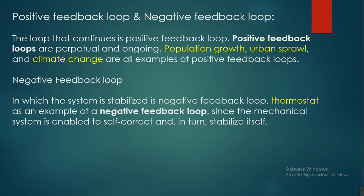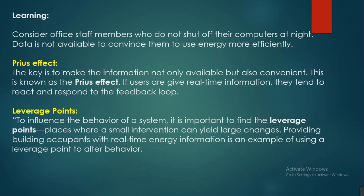Negative feedback loops stabilize a system. A thermostat is an example of a negative feedback loop, since the mechanical system is able to self-correct and stabilize itself. From these loops, consider office behavior: office staff members often forget to shut off their computers at night because they have no data available to convince them to use energy more efficiently. The key is to make information not only available but as convenient as possible — this is known as the price effect. If users are given real-time information, they tend to react and respond to the feedback loop.